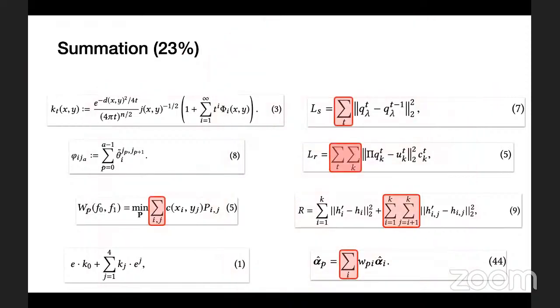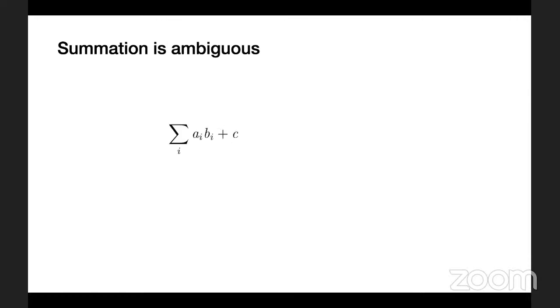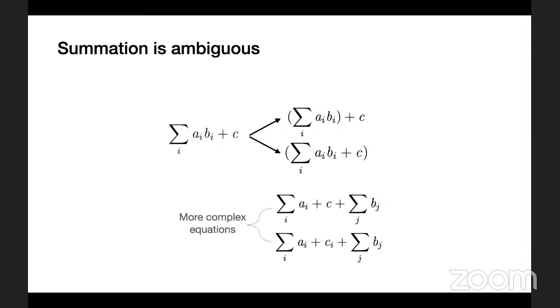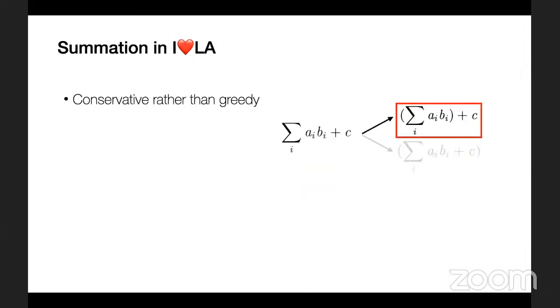Here are examples of summations, which sometimes have implicit index ranges, are nested, or are part of larger expressions. Note that the summation operation does not often enclose its content with parentheses. There is some ambiguity in conventionally written math — a given expression can have two interpretations, and this ambiguity grows in complexity with additional terms involving summation. We took an empirical approach, examining 10 complex summation formulas from SIGGRAPH 2019. Of these, 9 were interpreted correctly with conservative summation. The summation in AHDA-A is conservative rather than greedy: it only sums the first term to its right, not additional terms separated by addition or subtraction.